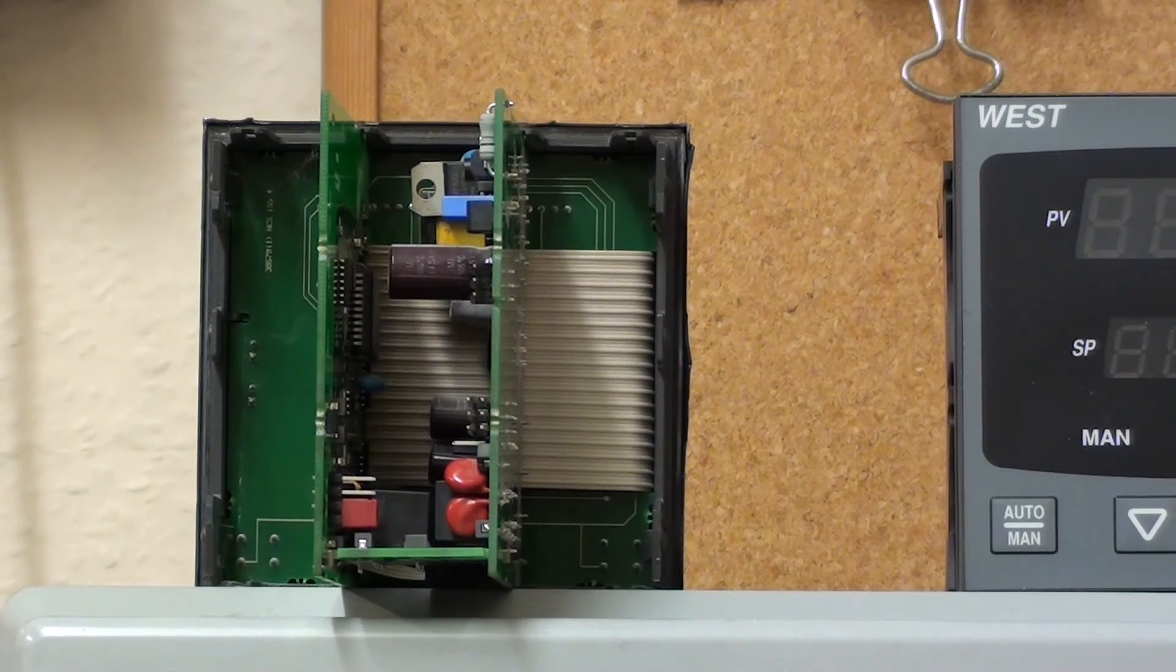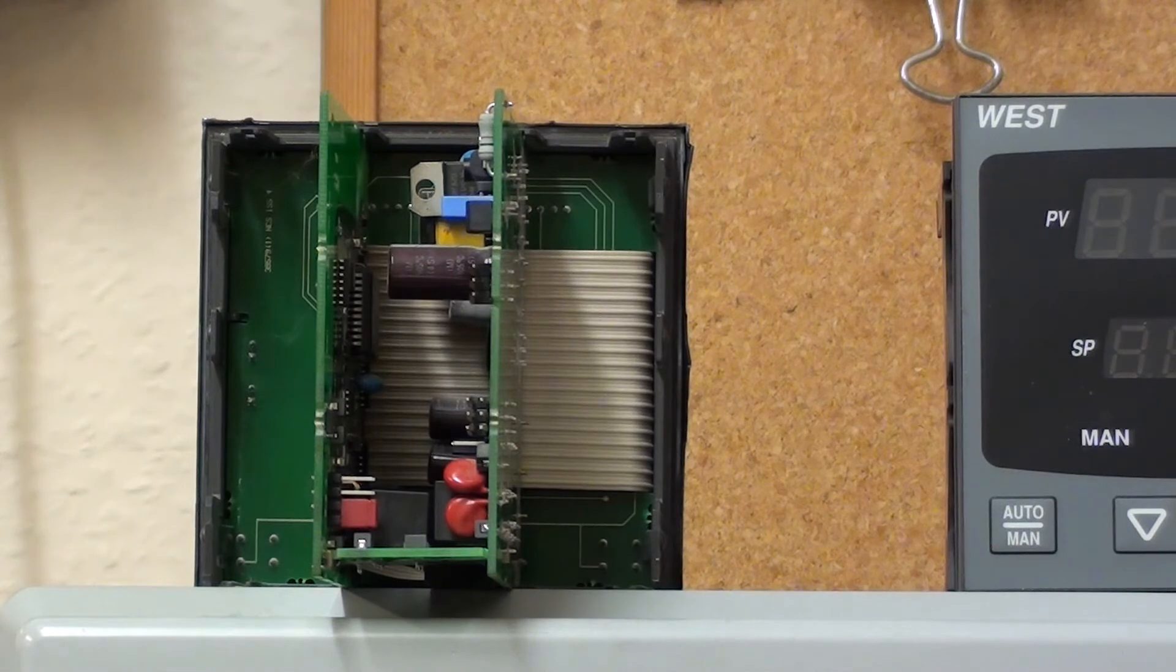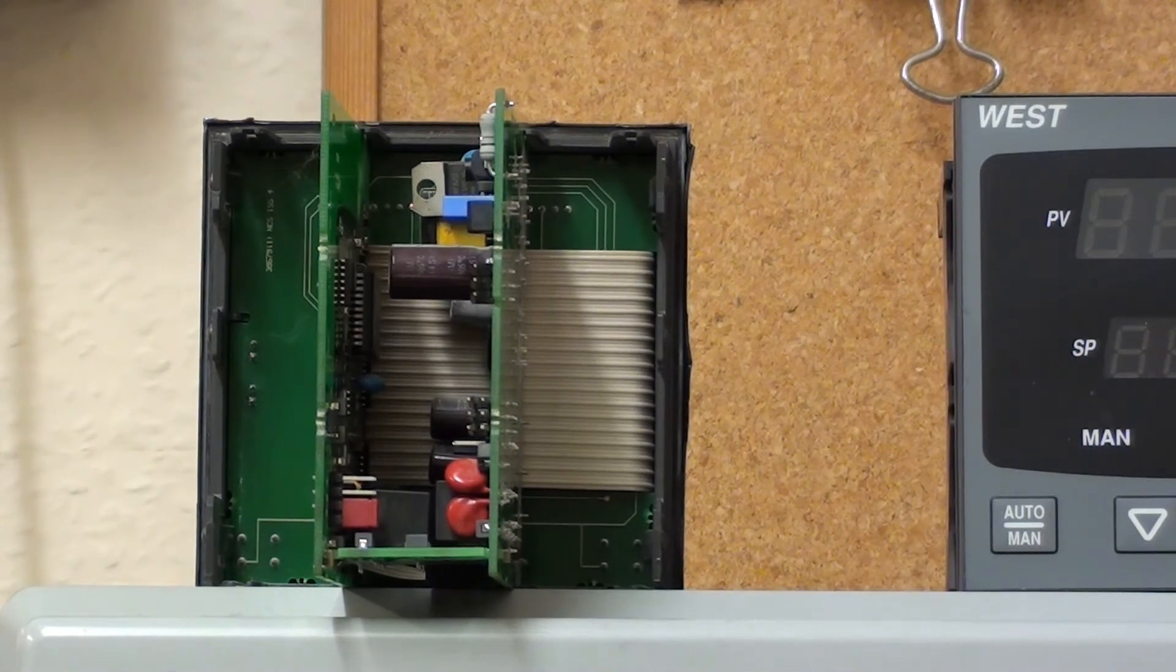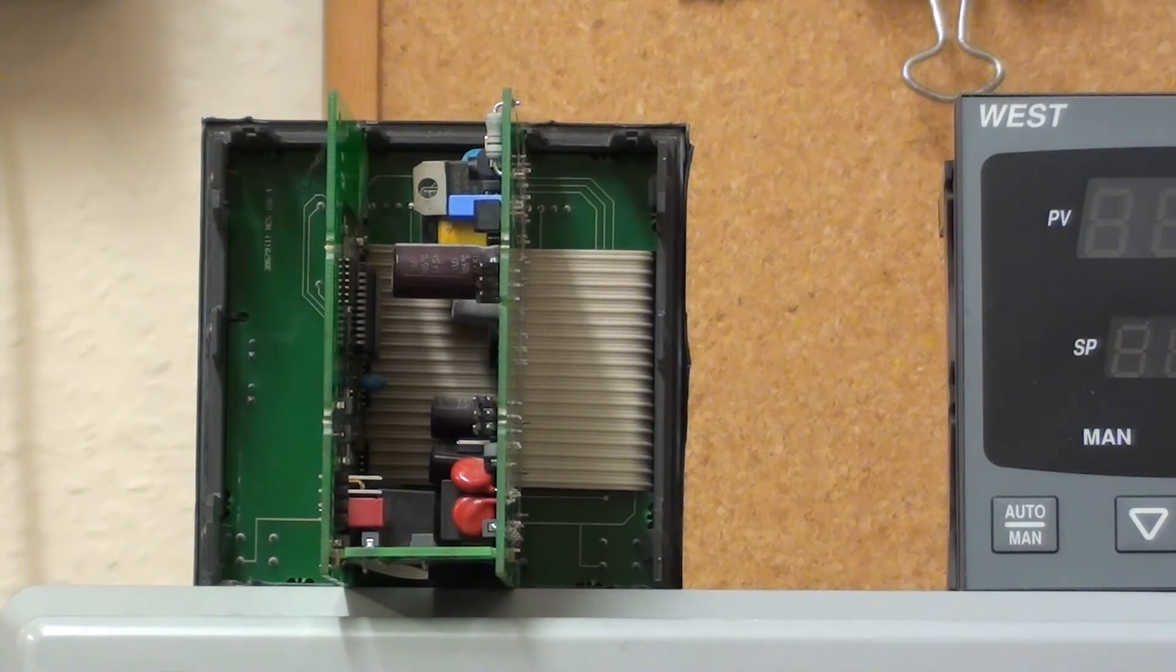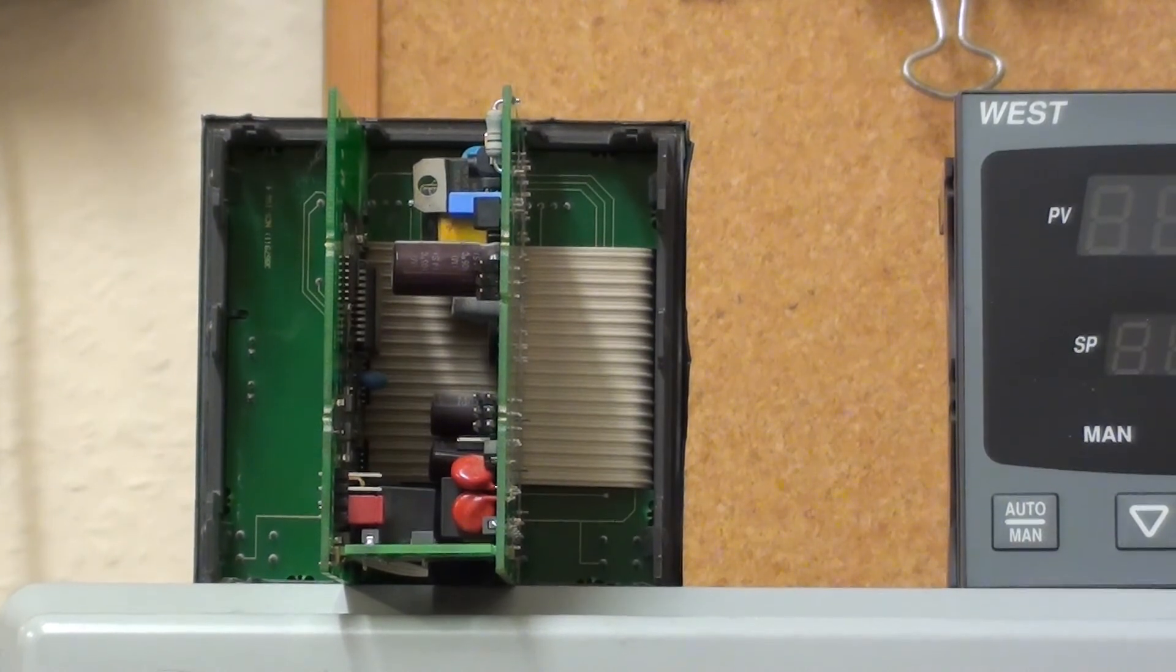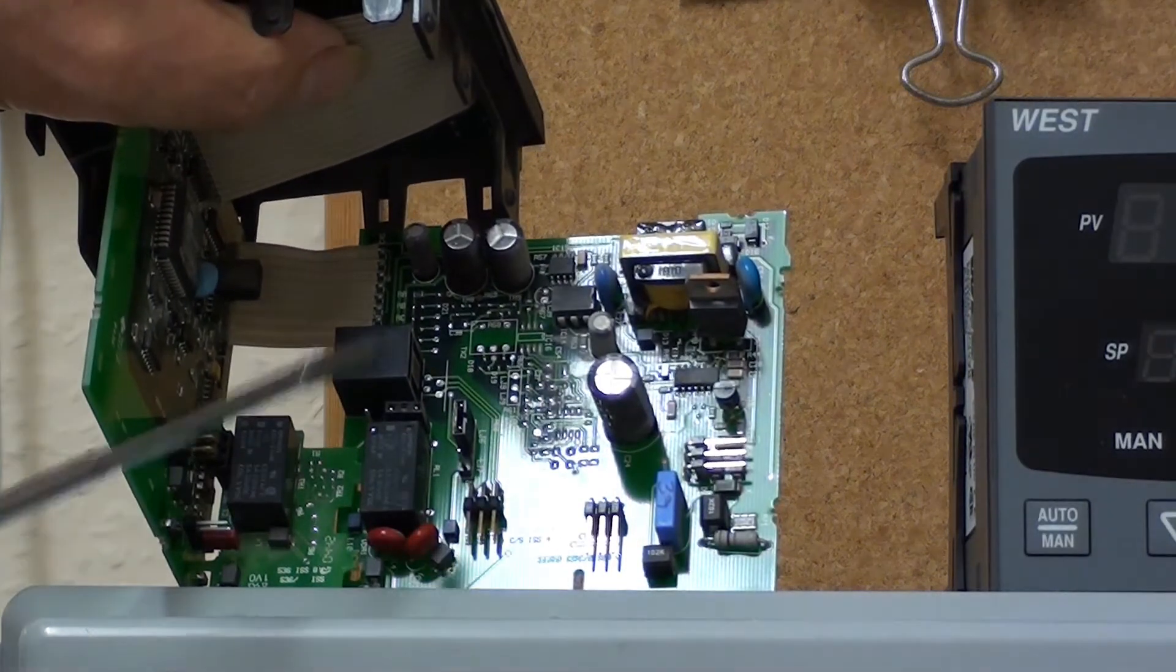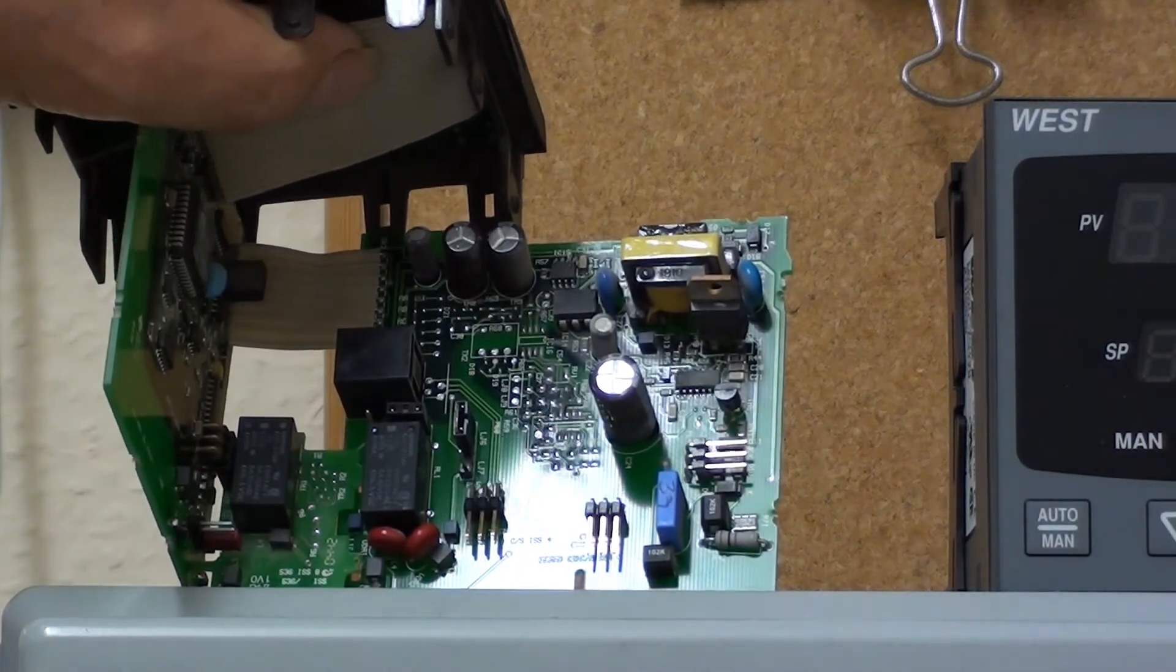In the N4170 there were link jumpers for the type of outputs required. Again, this isn't required on the latest P4170 model. Looking here you can see the link jumpers for the output.